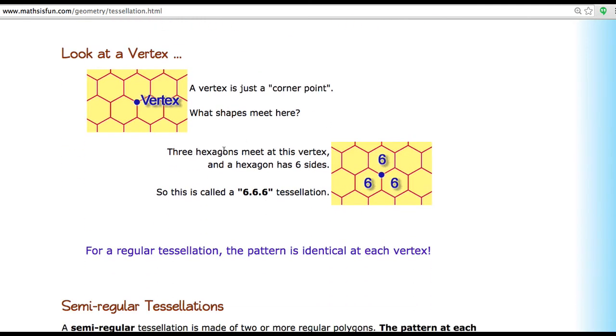So here we have three hexagons meet at the vertex and a hexagon has six sides. So this is a six by six by six tessellation.